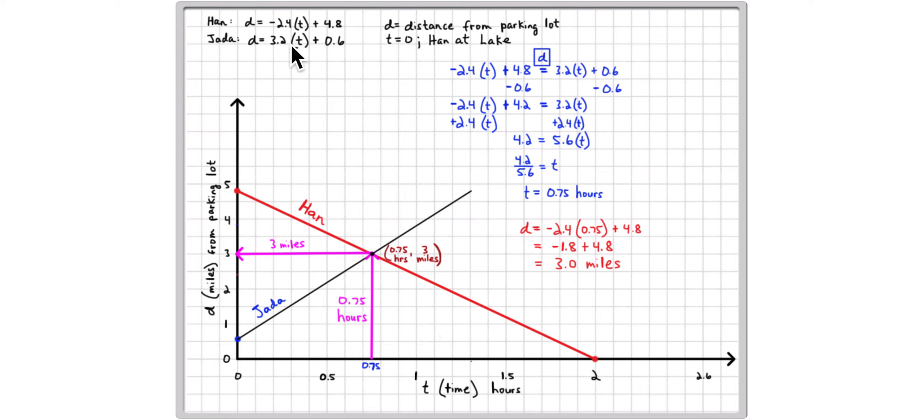So you use these two equations. To do that, you set those two equations equal to each other. You subtract 6 tenths, you add 2 and 4 tenths, you get this equation here. You divide by 5 and 6 tenths, use a calculator and figure out that the time is 75 hundredths of an hour. So in 3 fourths of an hour they meet. Use that time in one of the two equations and you figure out that they meet at three miles from the parking lot.